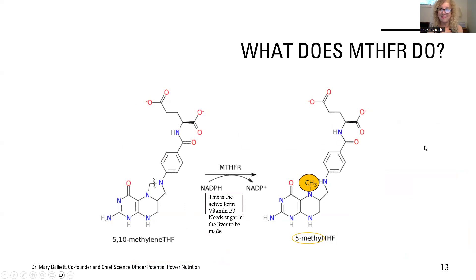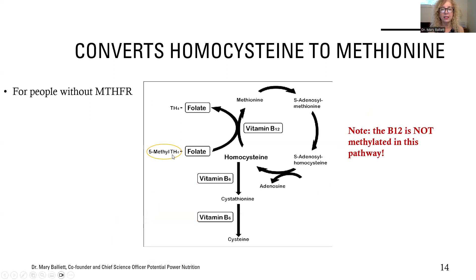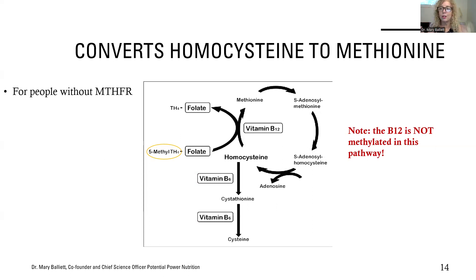The MTHFR enzyme — which 40% of us are missing — takes N5N10 methylene tetrahydrofolate (needed to make DNA) and converts it, using the active form of niacin (which needs sugar to be made in the liver), to methyl tetrahydrofolate. That methyl tetrahydrofolate then gives its methyl group to plain B12 — not methylated B12, plain B12. The methyl group moves from folic acid to B12, then B12 gives its methyl group to homocysteine, and homocysteine becomes methionine. I have to be able to pass it — if I can't pass it, I'm just getting jammed up. That's not how the game is played.